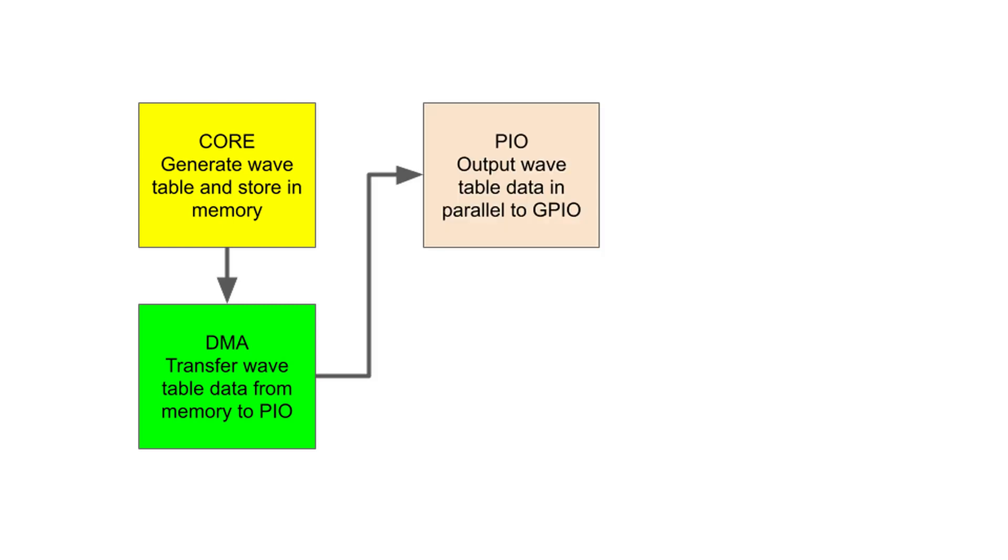Let's review the theory behind the arbitrary wave generator. A contiguous set of memory locations is filled with values representing a waveform, which we'll call a wavetable. That information is repeatedly output using direct memory access to the programmable input output.